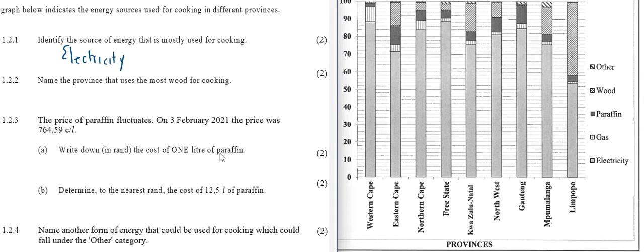Question 1.2.2: Name the province that uses most wood for cooking. If you look at the key for wood, it would be the bars with the diagonal lines. If you look at these provinces, you can see that the last one, Limpopo, is the province with the largest bar with the diagonal lines, the wood bar. So Limpopo.